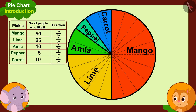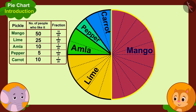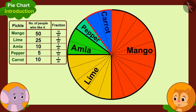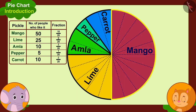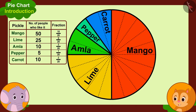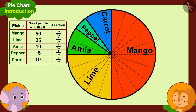Chanda is impressed: 'Now we can easily find out by looking at these parts that people like mango pickle the most, because the largest part of the pie chart shows mango.' The smallest part shows people who like pepper pickle and apple pickle, so those are the least popular. They also notice that similar-sized parts show amla and carrot pickle, meaning an equal number of people like those two.